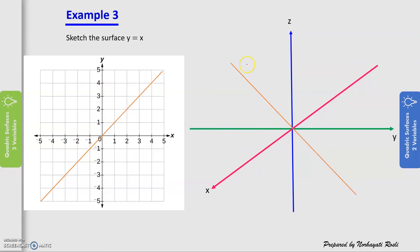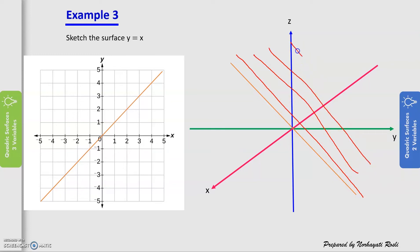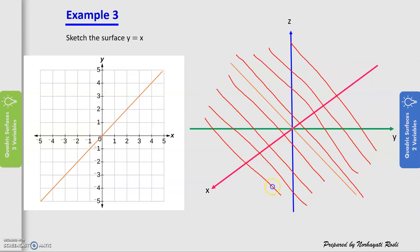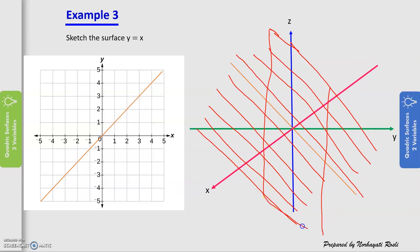Since we want to plot y = x in 3D, once we have the initial line, we draw parallel lines to the left and to the right of y = x. Using these parallel lines, we can then construct a surface — a plane — that represents y = x in 3-dimensional space.